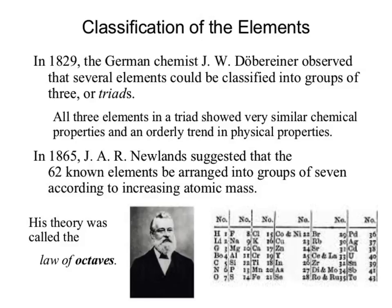The periodic table at that time was simple — we were largely looking at just the top three rows. How many columns are in the top three rows? Eight. And yet, what did he group by? Sevens. What's going on there?